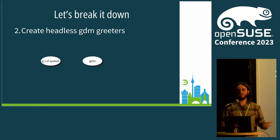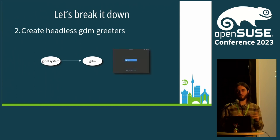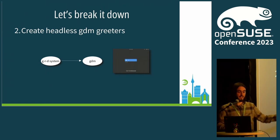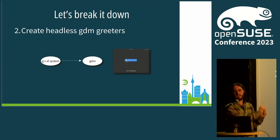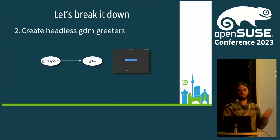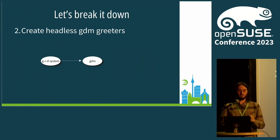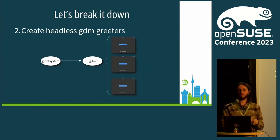GDM will create this headless greeter and will tell the system daemon: here is the new greeter, here you have the PipeWire and the DBus session address this greeter session is using. So now the system daemon can communicate with PipeWire, can communicate with Mutter, and can display remotely the login screen. With this approach, the system daemon is able to display multiple greeters at the same time.